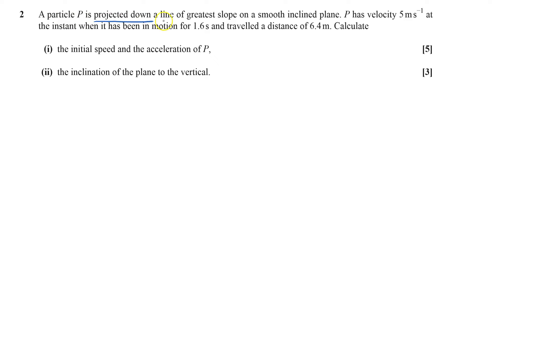Okay, a particle is projected down a line across a slope of a smooth inclined plane. It has velocity 5 meters per second at the instant when it's been traveling for 1.6 seconds and traveled a distance of 6.4 meters.